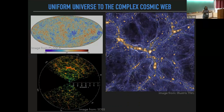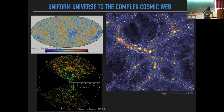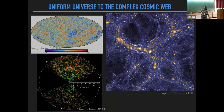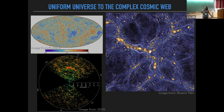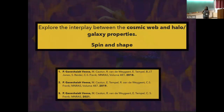You all know that matter in the universe is not distributed uniformly, but in these very nice intricate structures known as the cosmic web. You have very high-density regions known as clusters or nodes, which are interconnected by filaments. There are also large volumes devoid of galaxies, known as voids. We will see today how the different environments of this cosmic web influence the spin and shape of halos and galaxies.